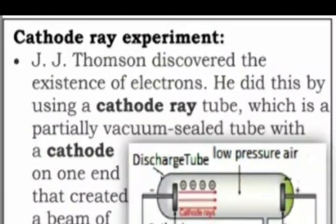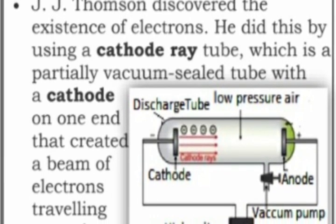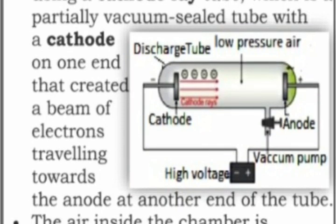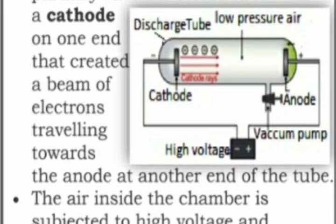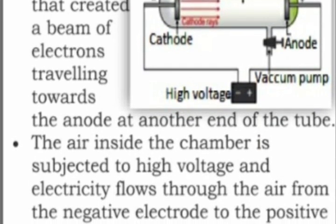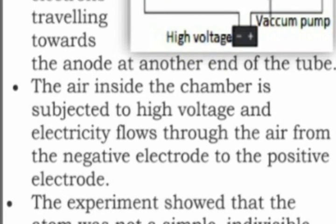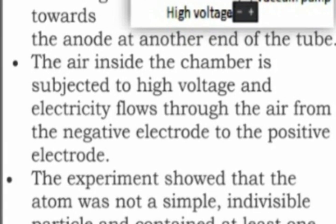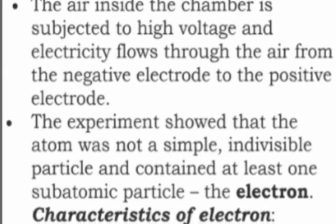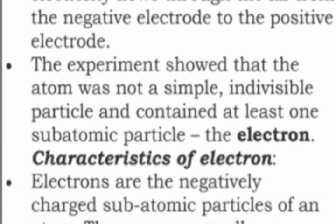Cathode Ray Experiments: J.J. Thomson discovered the existence of electrons. He did this by using a cathode ray tube, which is a partially vacuum sealed tube with a cathode on one end that created a beam of electrons travelling towards the anode at another end of the tube. The air inside the chamber is subjected to high voltage and electricity flows through the air from the negative electrode to the positive electrode. The experiment showed that the atom was not a simple, indivisible particle and contained at least one subatomic particle, the electron.